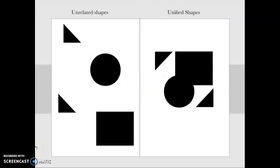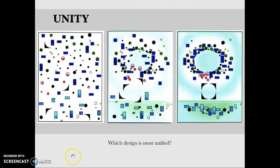We're talking about unity. We've got unrelated shapes, the shapes don't have unity, and unified shapes. Speaking on closure, thinking about proximity. Which design of these three is the most unified? We've got number one, number two, and number three. So in the comments below, tell me which number one, number two, or number three, which picture do you think has the most unity.